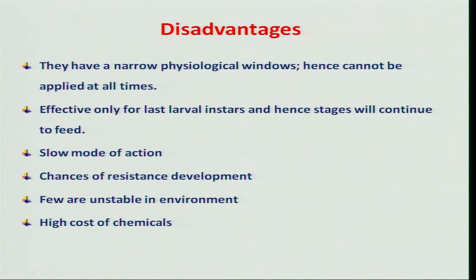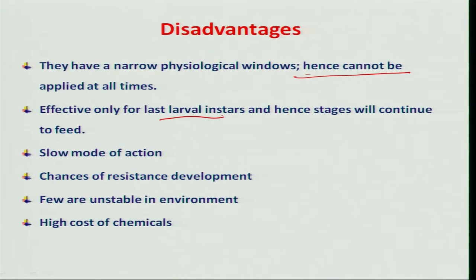IGRs are very eco-friendly because biodegradation is very fast in nature. At the same time, they have some disadvantages. Since they are effective against only a narrow group of insects, most insects cannot be controlled with IGRs. Since they are effective at the larval stage, if applied at a later larval stage the insects may continue feeding on the applied surfaces. Because their mode of action is slow, damage may continue in the field.